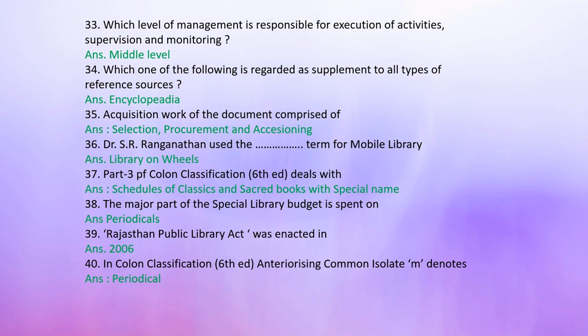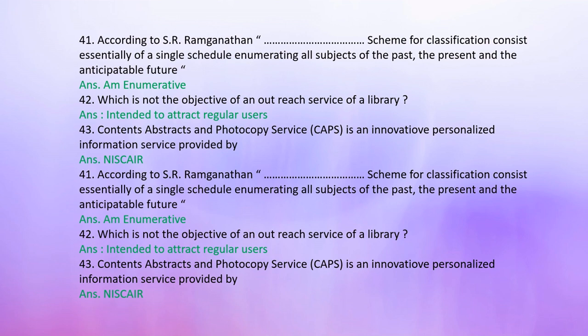Question 38: The major part of the special library budget is spent on — Answer: Periodicals. Question 39: Rajasthan Public Library Act was enacted in — Answer: 2006. Question 40: In Colon Classification 6th edition, the entering common isolate AMD denotes — Answer: Periodicals. Question 41: According to S.R. Ranganathan, a scheme for classification consisting essentially of a single schedule enumerating all subjects of the past, present, and anticipatory future is called — Answer: Enumerative.